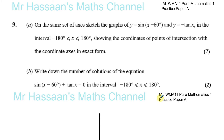We have question number nine from practice paper A for the International A Level Syllabus. Part A asks us to sketch on the same pair of axes the graphs of y equals sine(x minus 60) and y equals negative tan x in the interval of x between minus 180 and 180, showing the coordinates of points of intersection with the coordinate axes in exact form.